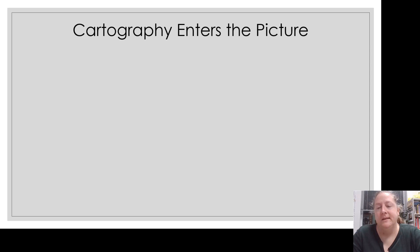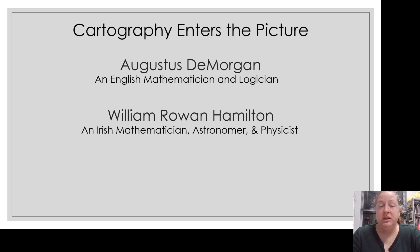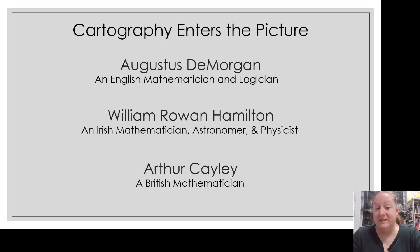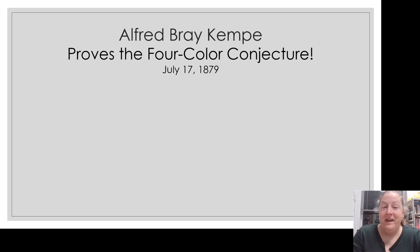People who played at this in the cartography realm were Augustus de Morgan, an English mathematician and logician; William Rowan Hamilton, an Irish mathematician, astronomer, and physicist; and Arthur Cayley, a British mathematician. Some of these names are probably sounding familiar because they've done huge things beyond this problem. But it was Alfred Bray Kempe, an English mathematician, who actually proved the four-color conjecture on July 17, 1879 — and as such, the four-color theorem was born.